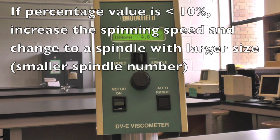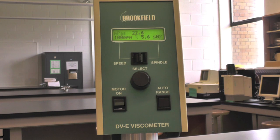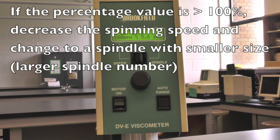If the percentage value is lower than 10%, increase the spinning speed and use a larger spindle. If the percentage value is higher than 100%, decrease the spinning speed and use a smaller spindle.